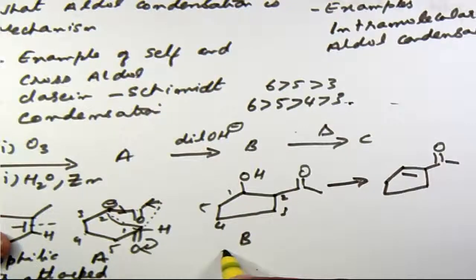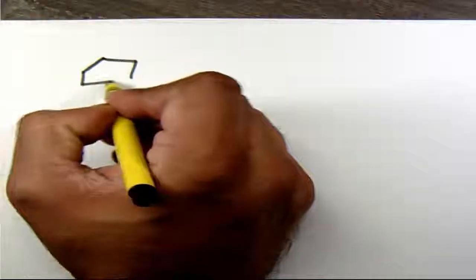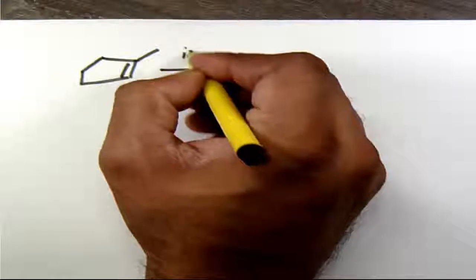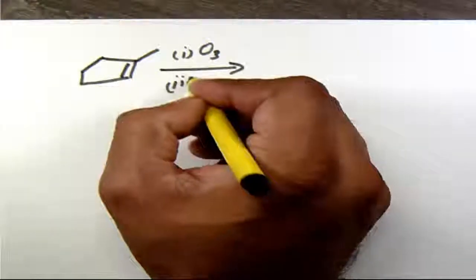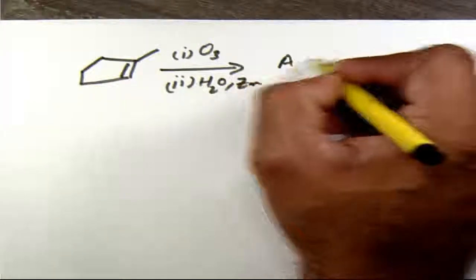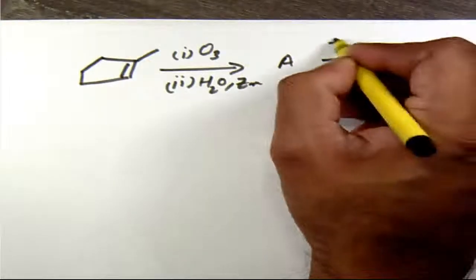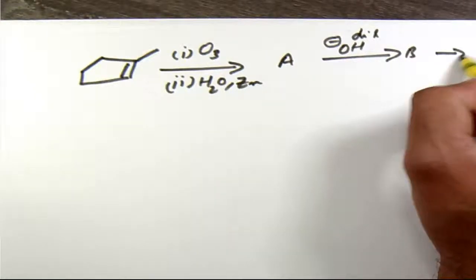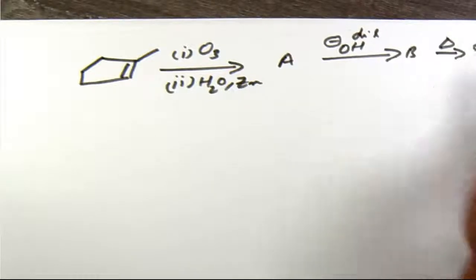I'm going to start with a six membered ring now. Let me change the page. So I'm going to take a five membered ring, methyl carbon and I do the ozonolysis, do the reductive hydrolysis, gives me the same product A, OH minus dilute, I get B and I heat this, I get C.